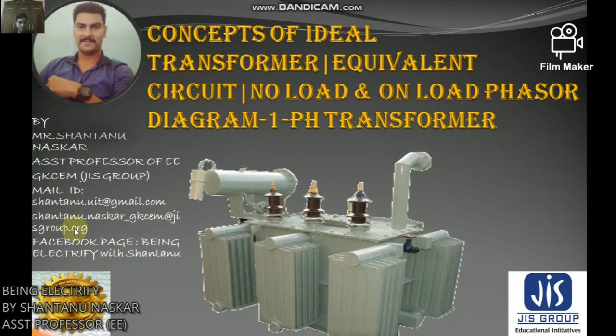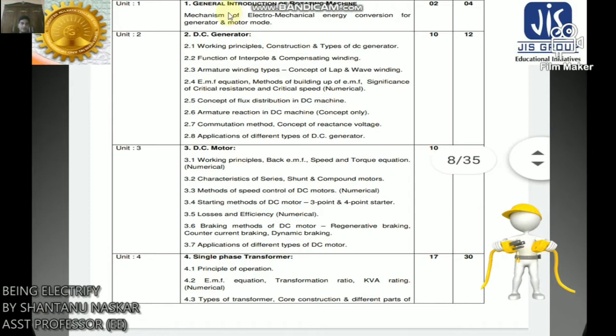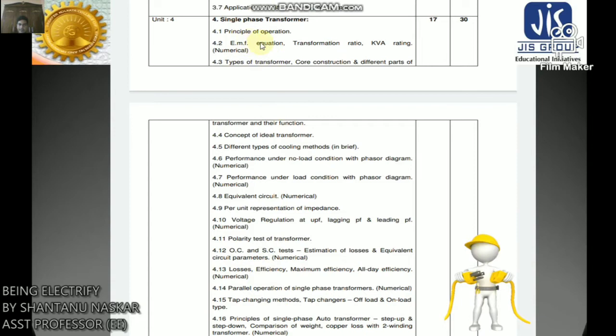I have already covered the general introduction of rotating machine, DC generator, DC motor, and in transformer I have covered principal operation, EMF equation, transformation ratio, KVA rating, and types of transformer. Today I will start the concept of ideal transformer, performance under no load condition with phasor diagram, on load condition with phasor diagram, and equivalent circuit — all very important topics in electrical transformer.